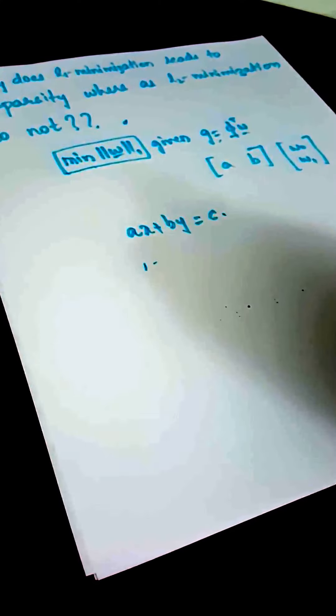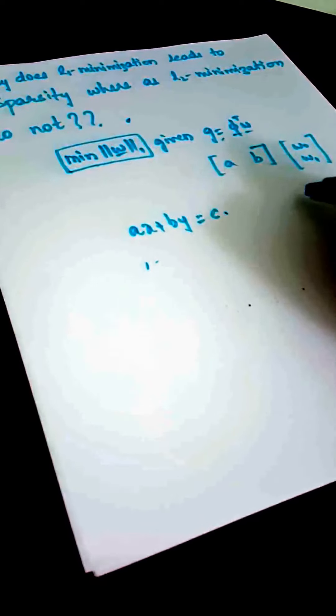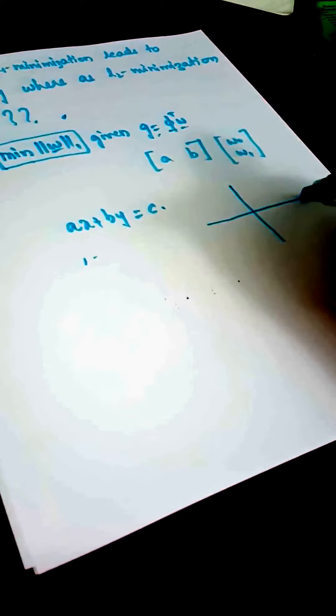Now we want to minimize L1 norm of W such that this line equation is also satisfied. We know the L1 norm ball is nothing but a diamond of some value.